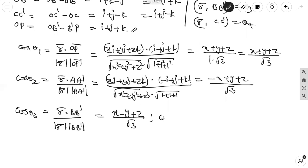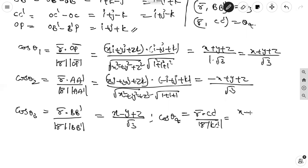That equals −x + y + z over under root of x² + y² + z² times under root of 1 + 1 + 1, which is root 3. Similarly, cos θ₃ = R⃗ · BB⃗ / (|R⃗||BB⃗|) = x − y + z over root 3. And cos θ₄ = R⃗ · CC⃗ / (|R⃗||CC⃗|) = x + y − z over root 3. These are the four angles.